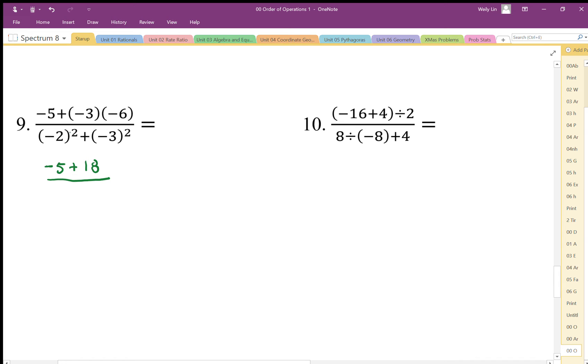This means negative 2 squared, which is positive 4, and negative 3 squared is positive 9 because the negative is in the brackets. We work out the numerator and end up with positive 13 in the numerator, positive 13 in the denominator. 13 divided by 13 is 1, so we end up doing the divide last.